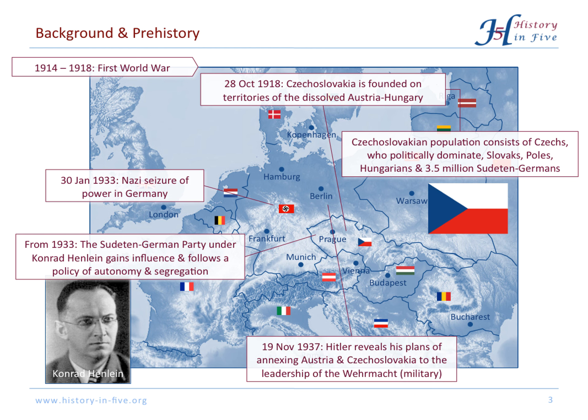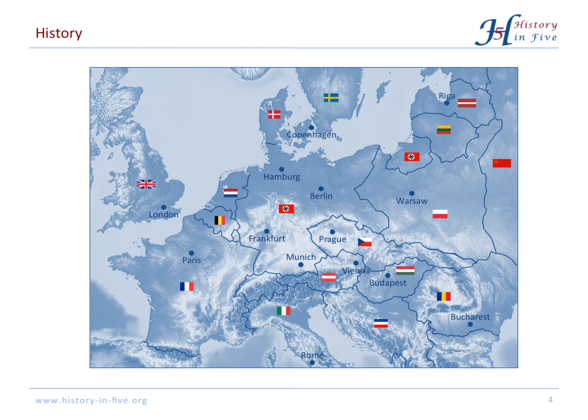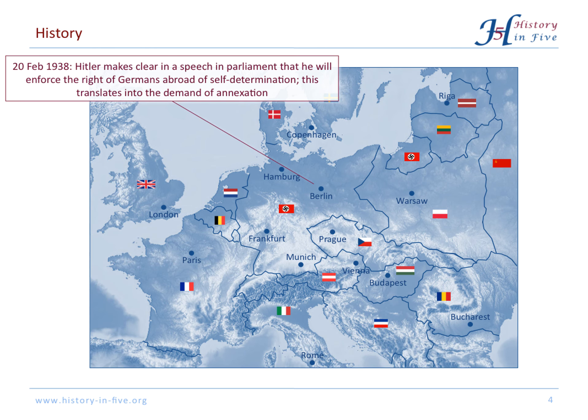In November 1937, Hitler revealed his plans of annexing Austria and Czechoslovakia to the military. The public learned about his ambitions in February 1938. Hitler said he would enforce the right of Germans abroad to self-determination, which translated into nothing else than wanting to annex these countries.